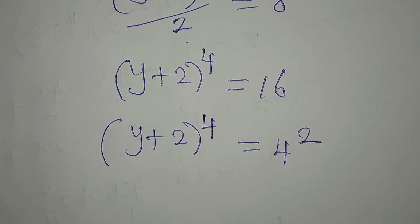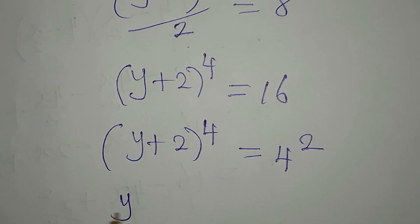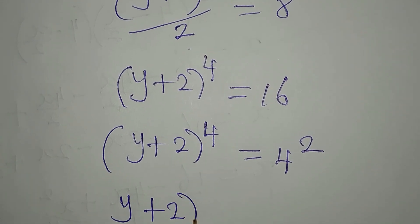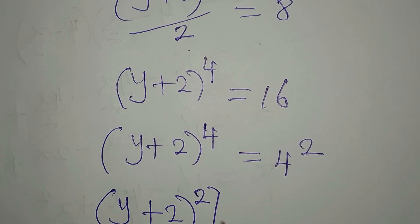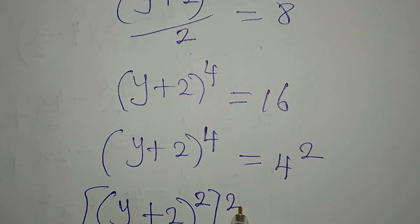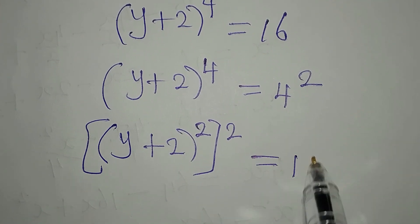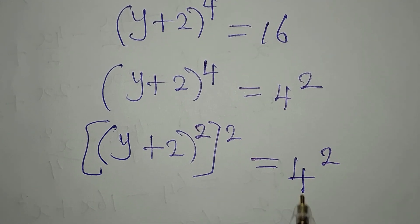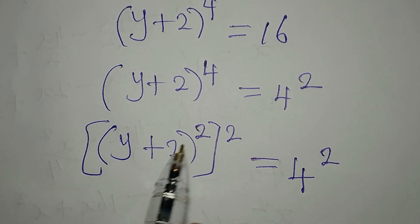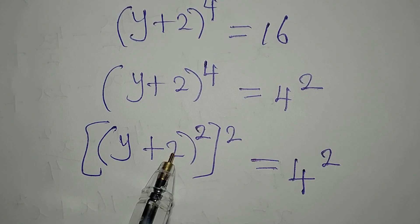We need to work on the power, so we have (y+2) to the power of 2, to the power of 2, again being equal to 16, which is now 4 squared. If we bring this to the left we will have a difference of two squares, but first let's expand what we have here.